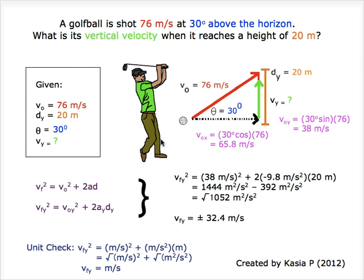Looking at our diagram, first we have to split the initial velocity into its horizontal and vertical components. The component calculations of v0y and v0x are shown in magenta.